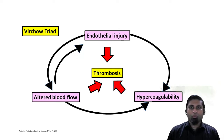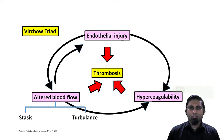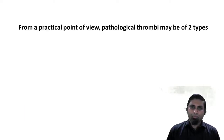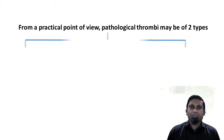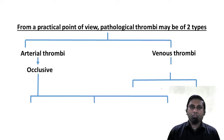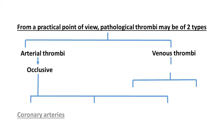Normal blood flow is laminar blood flow, and anything that disrupts this could cause either stasis or turbulence. The classical example of a cause for stasis of blood is atrial fibrillation. Endothelial injury is classically caused by dyslipidemia and systemic inflammatory disorders, and more recently there is increasing evidence that COVID-19 is also capable of producing endothelial injury as well as hypercoagulability. From a practical point of view, pathological thrombi may be arterial or venous — arterial thrombi tend to be more occlusive while venous thrombi tend to be embolic in nature.